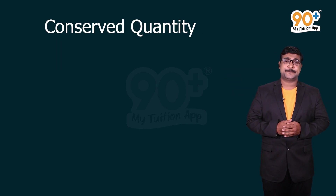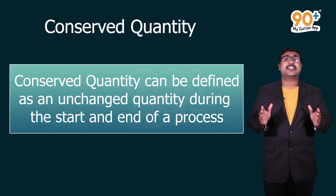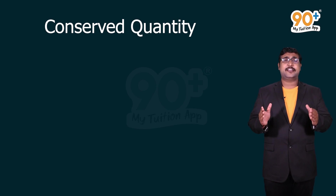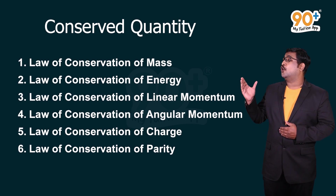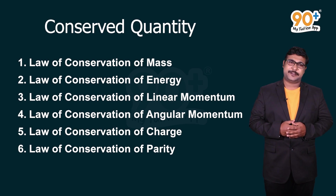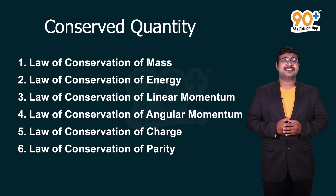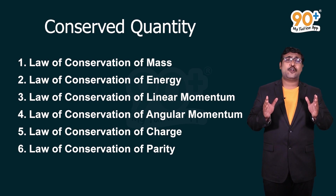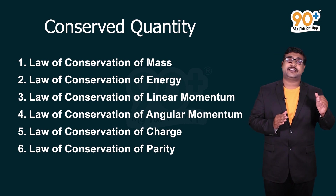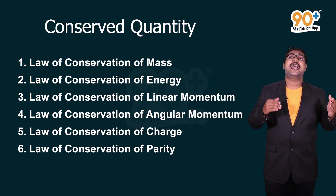Our next topic is the nature of physical law. A conserved quantity is an unchanged quantity during the start and end of a process. There are six laws based on conserved quantities: law of conservation of mass, energy, linear momentum, angular momentum, charge, and parity. Mass and energy are scalar quantities, whereas linear momentum, angular momentum, charge, and parity are vector quantities. Hence, conserved quantities can be both vector and scalar.